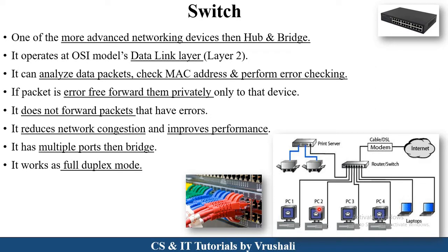What makes the switch more advanced is error checking. When PC one sends information to the switch, the switch checks whether the particular information is accurate, whether there is any error or fault. If the information is error-free, only then it sends it to the destination address. If there are any errors, it does not forward the packets. Switch has multiple ports compared to bridge, and works on full duplex mode — meaning it can perform both sending and receiving operations at the same time. Switch works on the second layer of the OSI model, that is the data link layer.